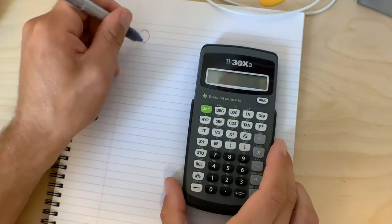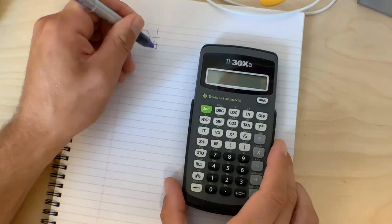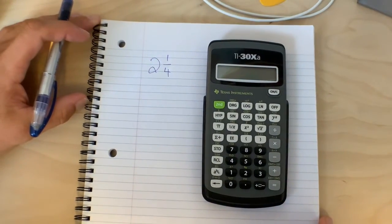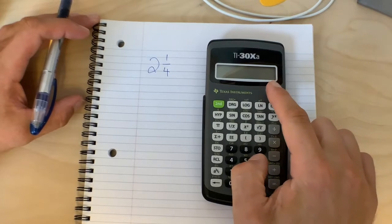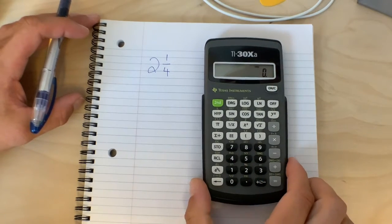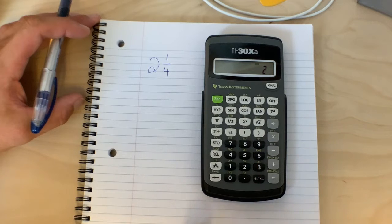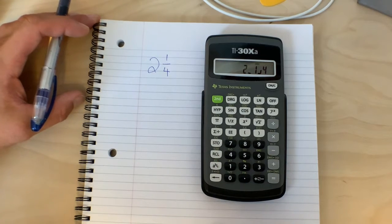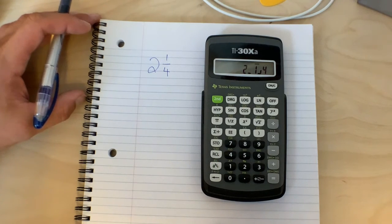So let's say you had something like two and one quarter. Two and one quarter can get inputted into the calculator very easily. First you gotta turn it on, and then you're gonna put two, fraction button, one, fraction button, four.